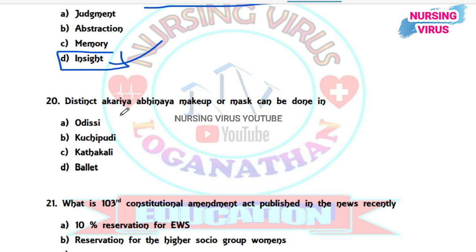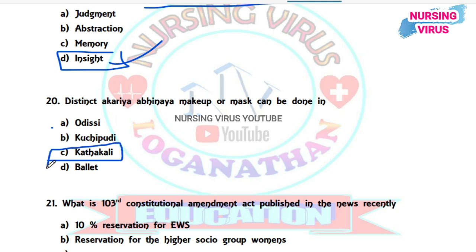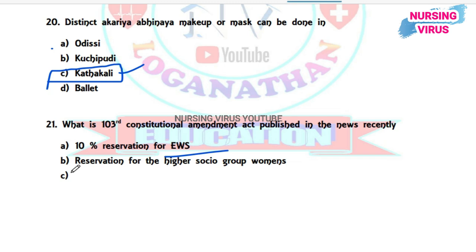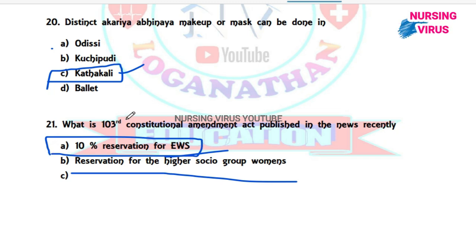Question 20 (GK): In which classical dance form can distinct Aharya, Abhinaya makeup, or face masks be done? The options are Odissi, Kuchipudi, Kathakali, and Bharatanatyam. The correct answer is Kathakali — in Kathakali, the face is covered with full makeup and mask work is done while dancing. Question 21: The 103rd Constitutional Amendment Act relates to what? The correct answer is 10% reservation for the economically weaker section, as amended by the 103rd Constitutional Amendment Act.